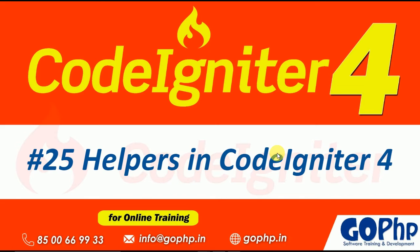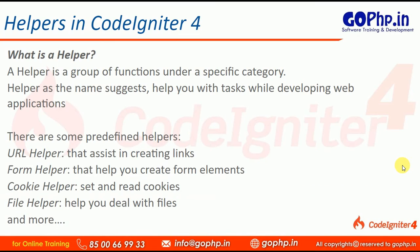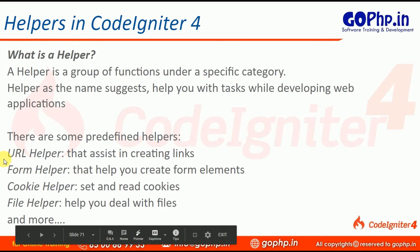What is a helper? A helper is nothing but a group of functions or collection of methods under a specific category. Helper, as the name suggests, will always help us in our application development. We have some predefined helpers: URL helper, Form helper, Cookie helper, and File helper.